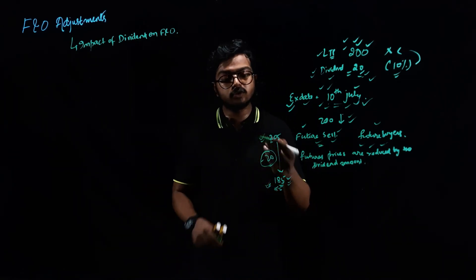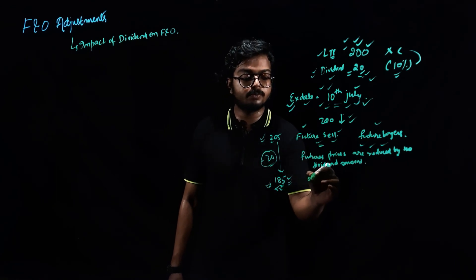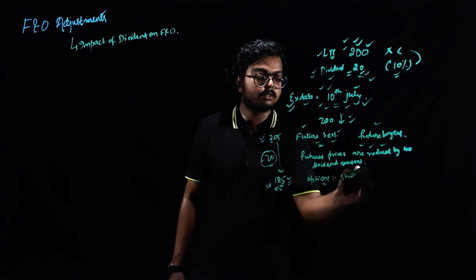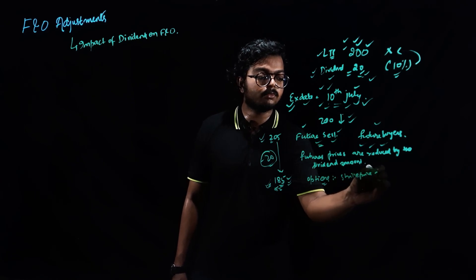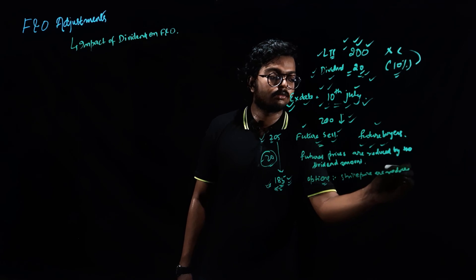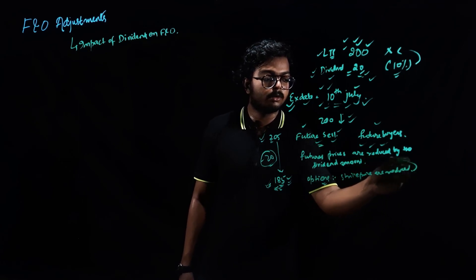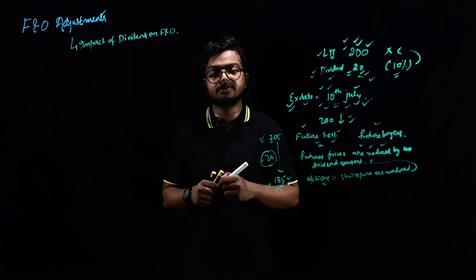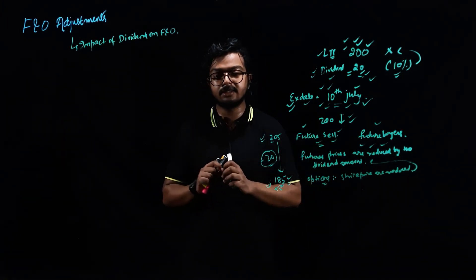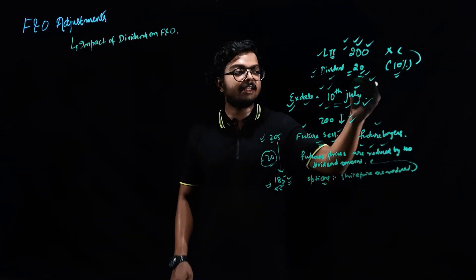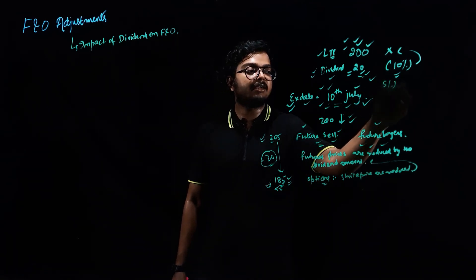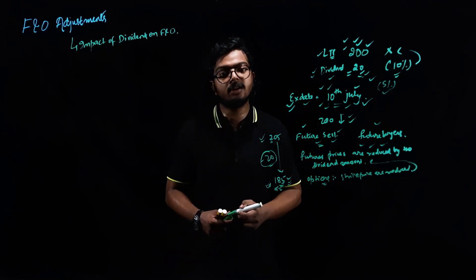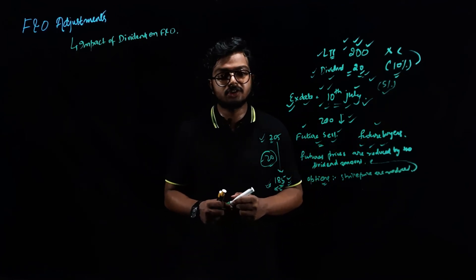So remember this, and this also happens in case of options. Also in case of options, the strike prices are reduced by dividend amount, by this dividend amount. So I will be providing the link in the description below. You can check all the details there. It is completely mentioned. Generally above 5% dividend, if a company is providing above 5% dividend, then this rule is applicable. Below 5%, this is not applicable.